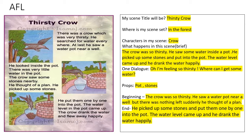Let's check the answers. Scene title: 'Thirsty Crow.' Where is the scene set? In the forest. Characters: crow — we can only find the crow here. What happens in the scene? The crow was so thirsty. He saw some water inside a pot. He picked up some stones and put them into the pot. The water level came up and he drank the water happily. One dialogue: 'Oh, I'm feeling so thirsty. Where can I get some water?' Props: pot and stones. Beginning: The crow was so thirsty and saw a water pot near a well, but there was very little water. Suddenly he thought of a plan. End: He picked up some stones and put them one by one into the pot. The water level came up and he drank the water happily. If your answers are right, put a tick mark and write SA — self-assessment — as done.